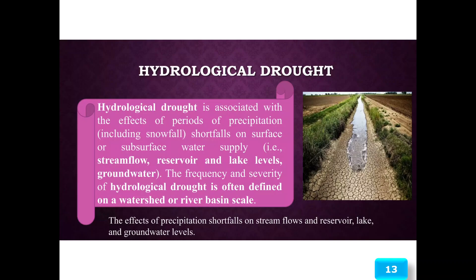Hydrological drought is associated with the effects of periods of precipitation shortfalls — including snowfall — on surface or subsurface water supply, that is, stream flow, reservoir and lake levels, and groundwater. The frequency and severity of hydrological drought is often defined on a watershed or river basin scale.